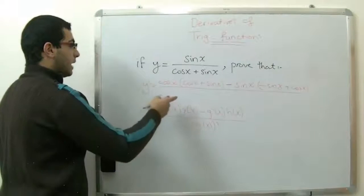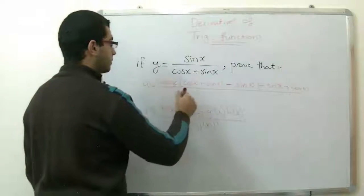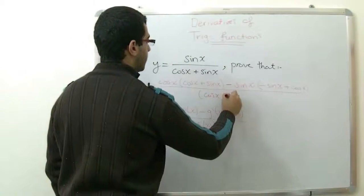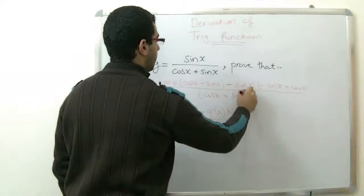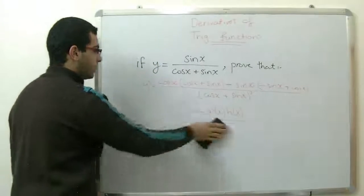And we have here the denominator squared. So we will write cosine x plus sine x, all squared. This is our first step.